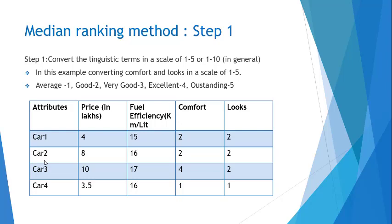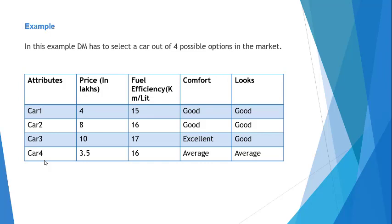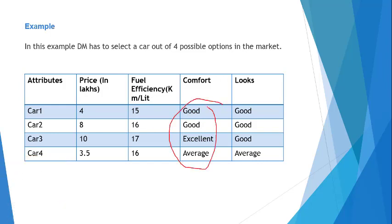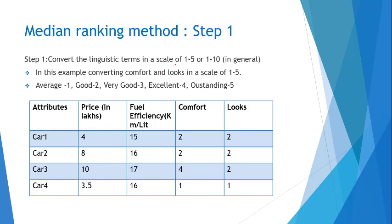In step number 1, as we can see, for comfort and looks the attribute values are given as linguistic terms such as good, good, excellent, average. In this method, we first convert these linguistic terms into numerical values using a scale of 1 to 5. For this example: 1 is for average, 2 is for good, 3 is for very good, 4 is for excellent, and 5 is for outstanding.